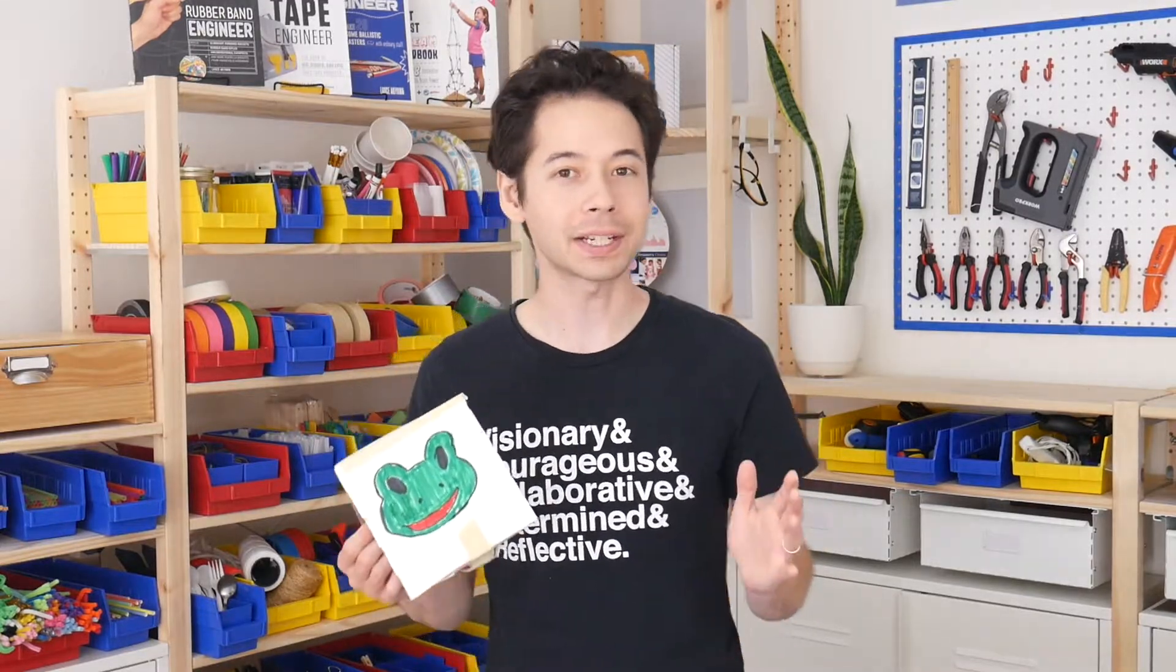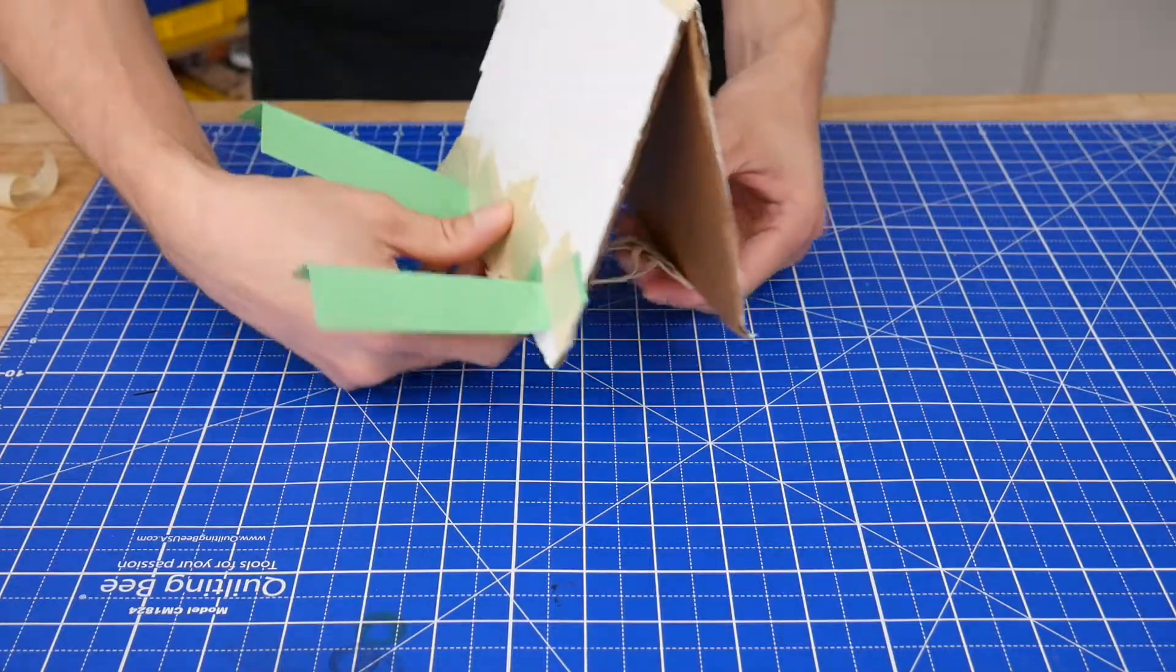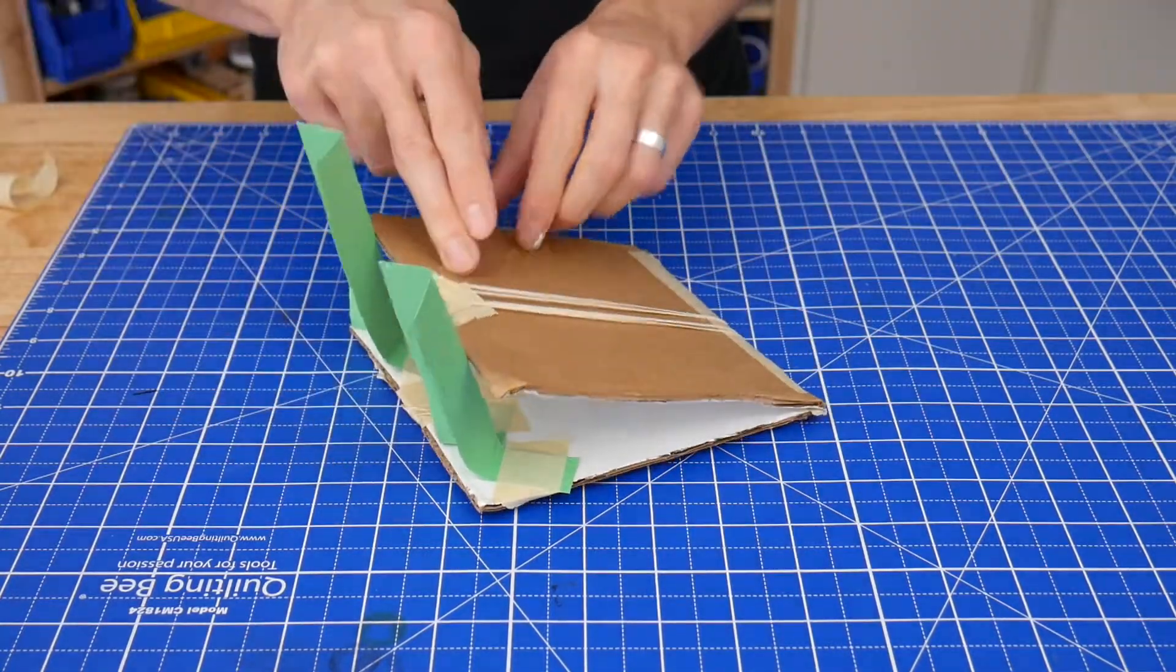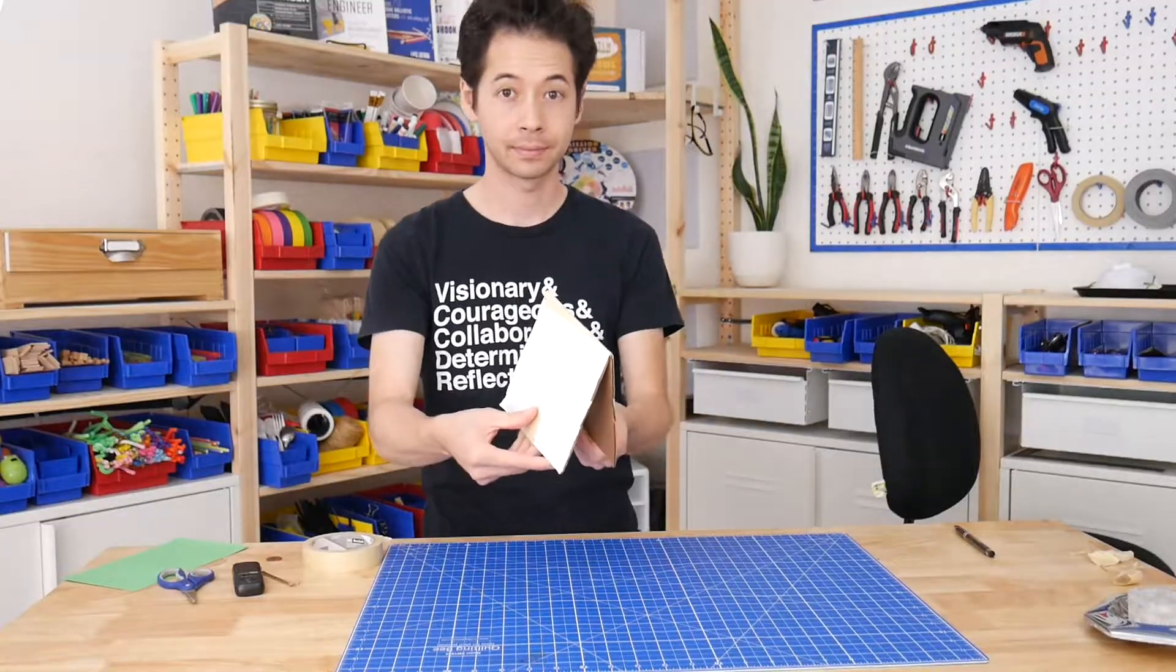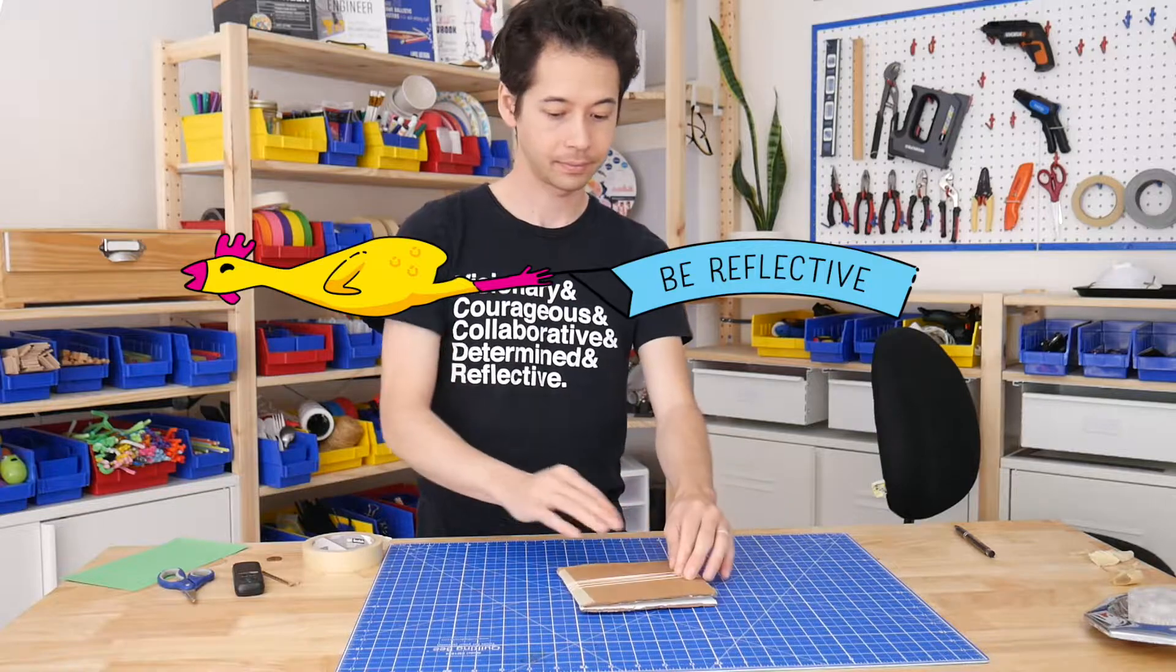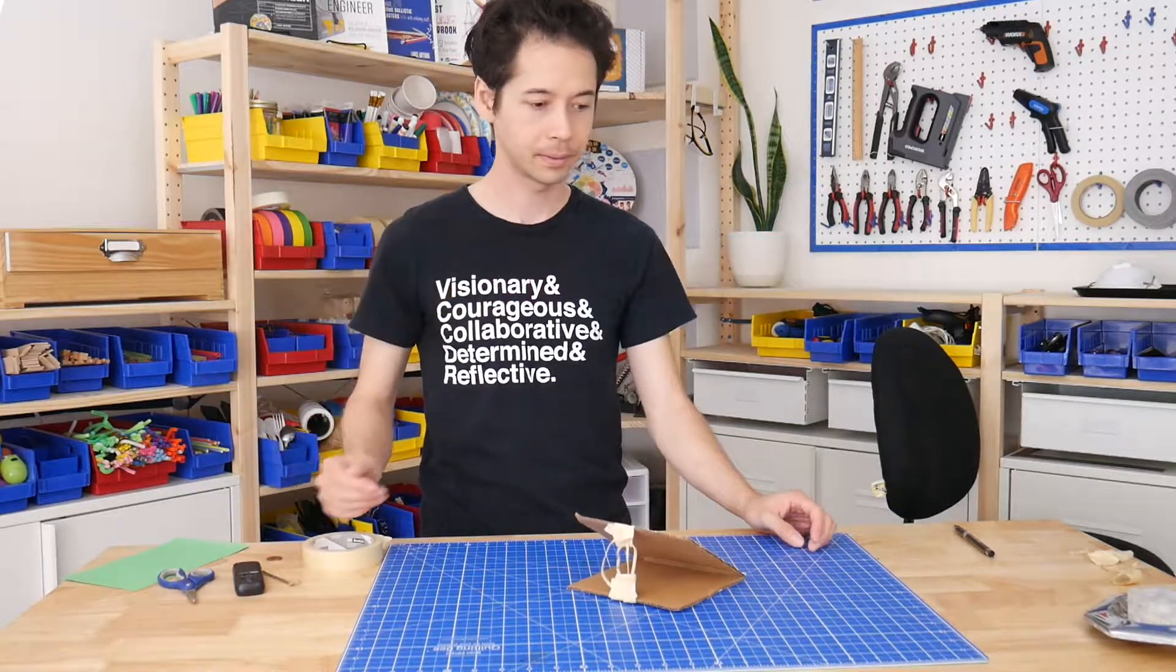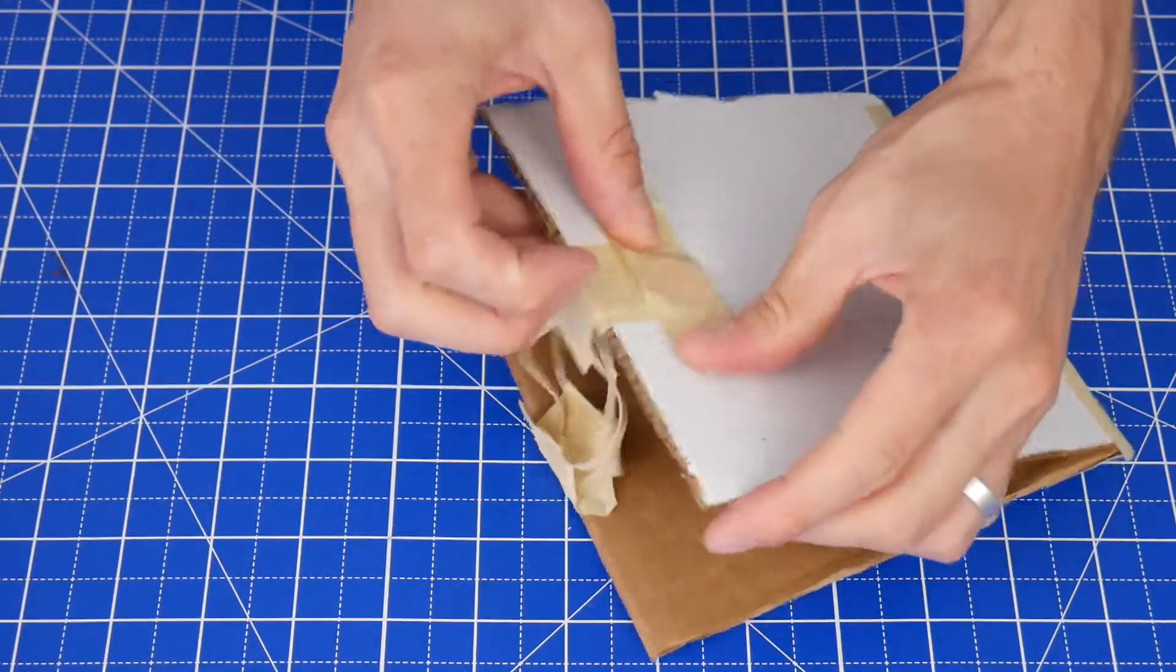And finally, if you're feeling especially ambitious, there is a bonus challenge of making some paper legs so that the frog lands on its feet at least two times in a row. For all three of these challenges, you'll need to be reflective by thinking carefully about how the weight is changing the way the frog jumps and thoughtfully redesigning to better achieve the goals.